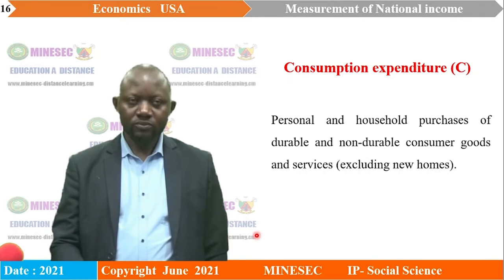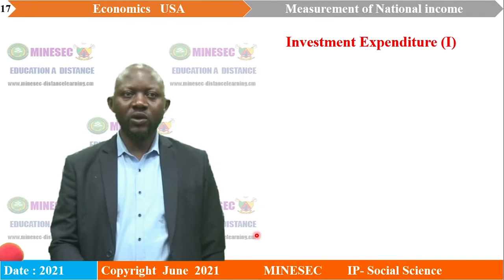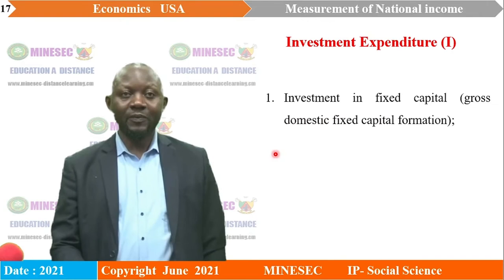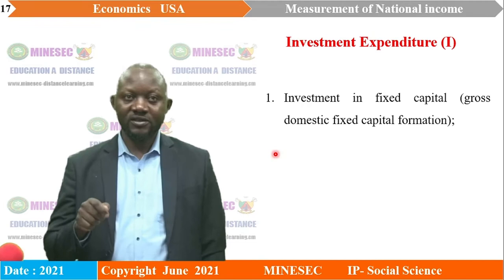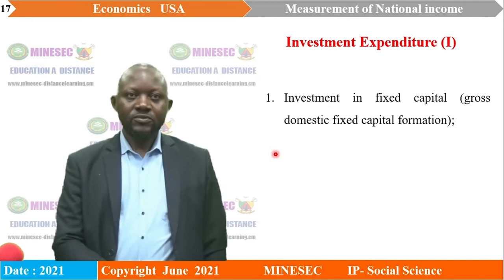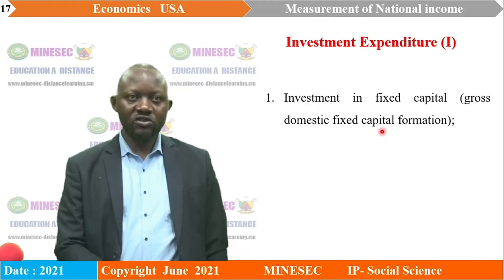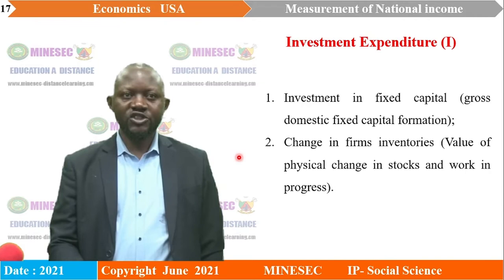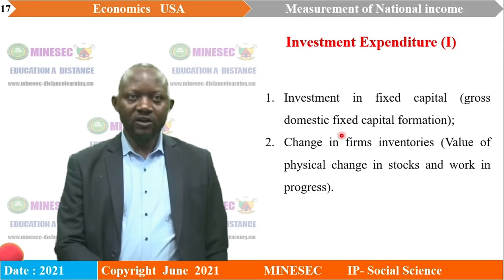The next component is investment expenditure, which has two sub-components. The first is investment in fixed capital — factory buildings, business lorries, vehicles, and so forth — otherwise known as gross domestic fixed capital formation. The second is change in firms' inventories: the value of physical change in stocks and work-in-progress.